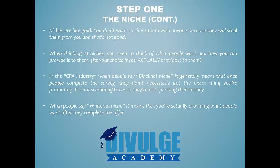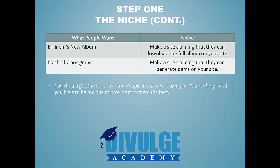When thinking of niches, you need to think of what people want and how you can provide it to them. In the CPA industry, a black hat niche generally means that once people complete the survey, they don't get the exact thing you're promoting — it's not scamming because they're not spending money. A white hat niche means you're actually providing what people want after they complete the offer. For example, if you make a site claiming people can download Eminem's new album and you actually give them the album after they complete the survey, that's white hat. Clash of Clans gems would be a black hat example — there are no real hacks, so after completing the survey, they won't get the gems.